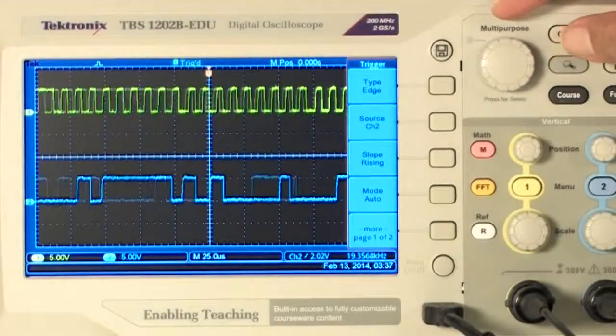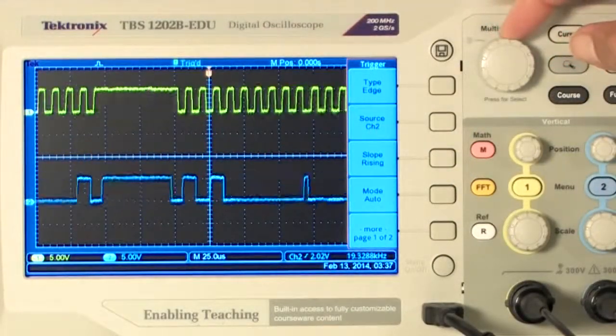We'll set the scope up to look for idle time in between clock bursts. I'll press Auto Set to get started. The waveforms show up, but they're not very stable.